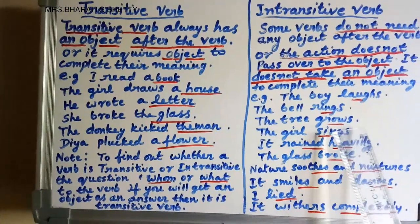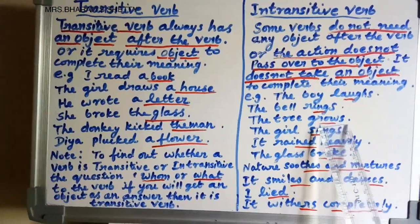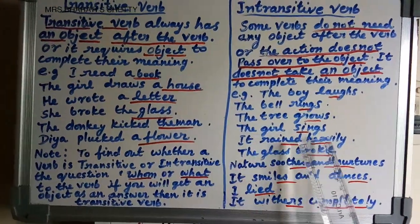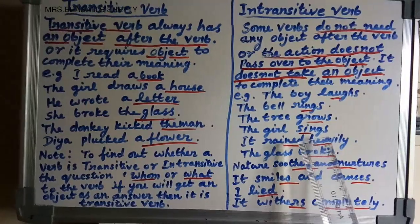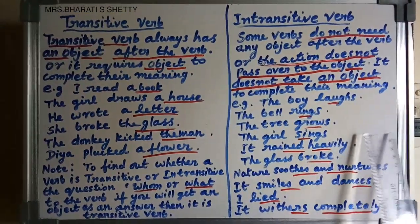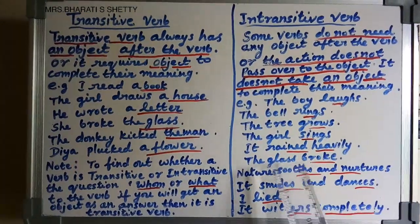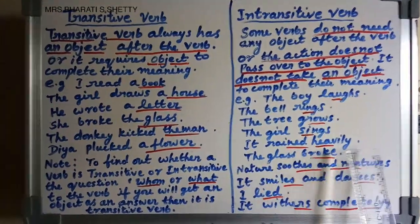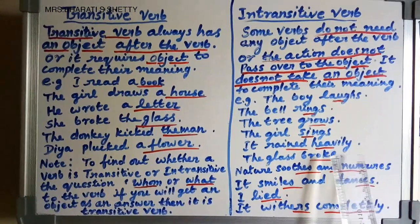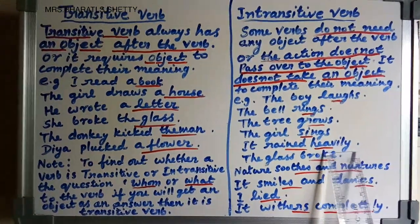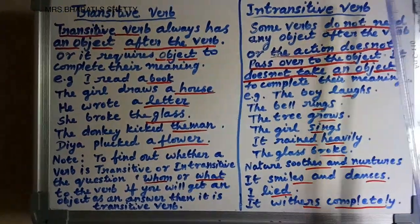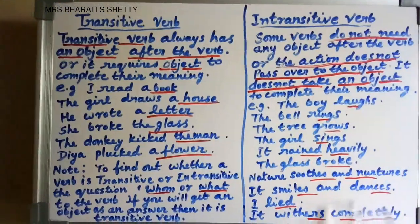The tree grows — here also, verb, no object after it. The girl sings — verb, no object. It rained heavily — here, after the verb you can see an adverb, so this is also intransitive verb. And the glass broke — no object after the verb.